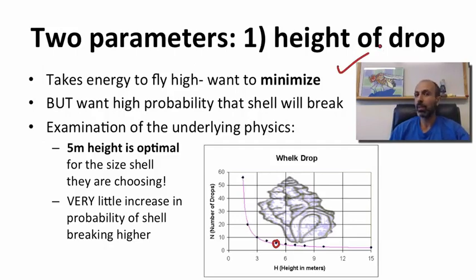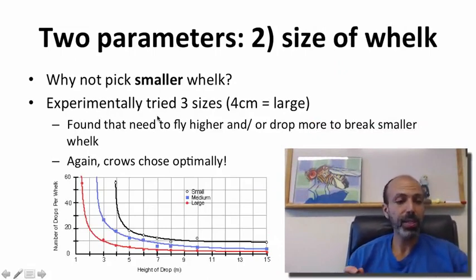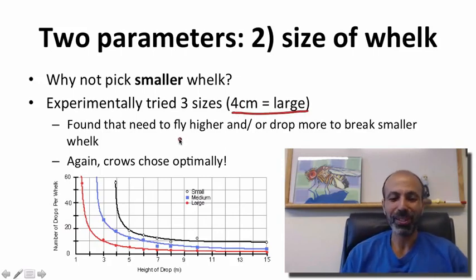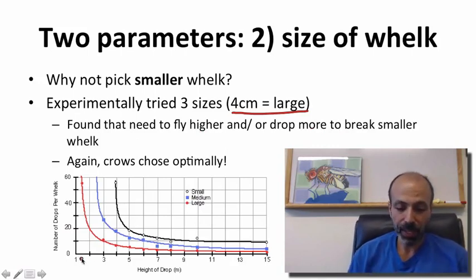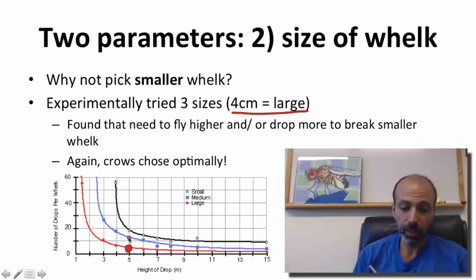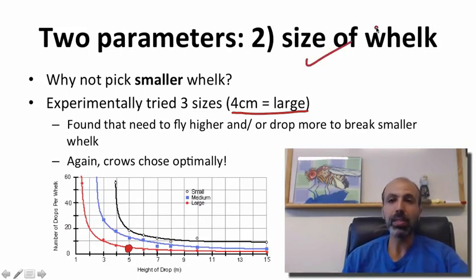What about the size of whelk? Couldn't they have picked a smaller whelk? They experimentally tried three sizes. The one they picked is referred to as large — the four centimeter whelks. They found the bird would need to fly higher and/or drop more times to break a smaller shell. On the x-axis is height of drop; on the y-axis is number of drops needed per whelk. For the large whelk — the one they chose — performance is best. If they chose a medium-sized whelk, they'd need to drop it about twice as many times, and even more for a very small whelk. So it seems they did choose adaptively.